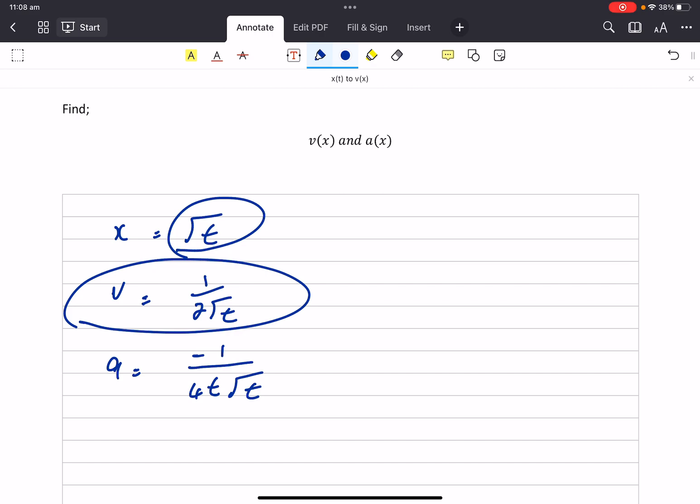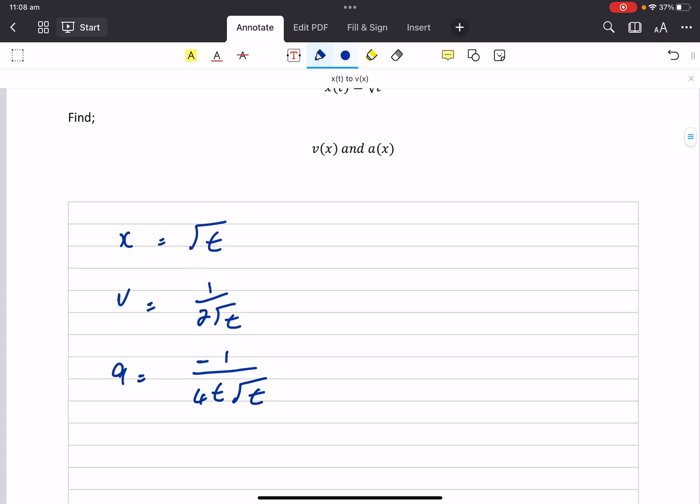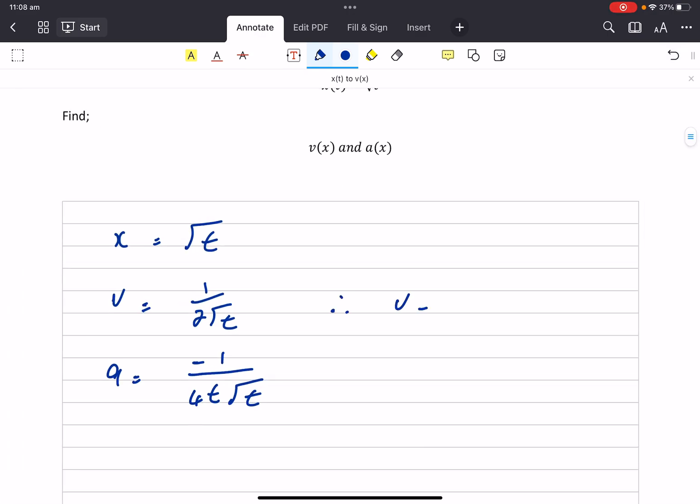But let's just use parametric equations to get that root t down there or substitution to get rid of it. So I'm going to go, therefore, v will equal 1 on 2x because root t is the same as x.